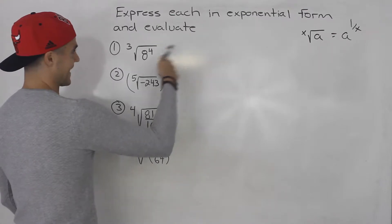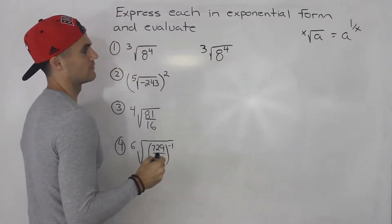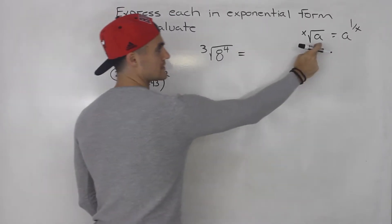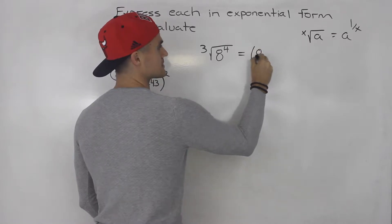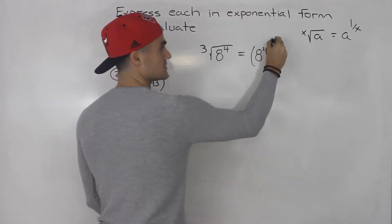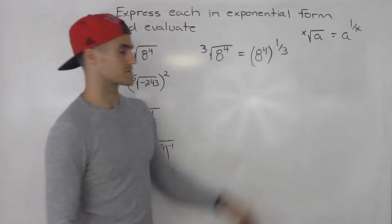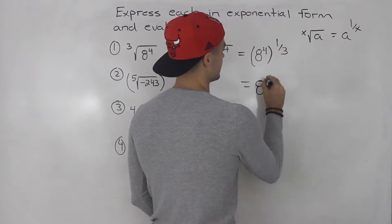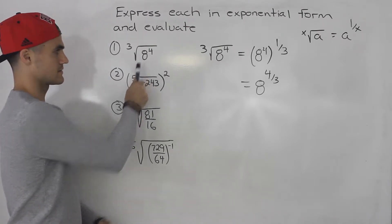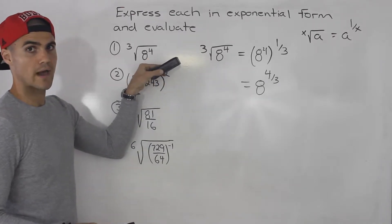Using that law, we have the third root of 8 to the power of 4. This 8 to the power of 4 is the whole base value, so we put that in brackets. Since this is the third root, that becomes to the power of 1 over 3. We can then multiply those exponents, so this rewrites as 8 to the power of 4 over 3.